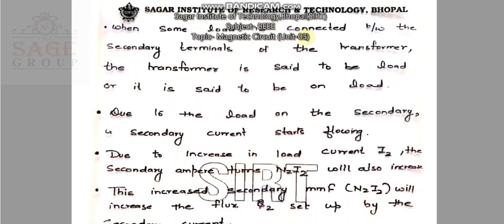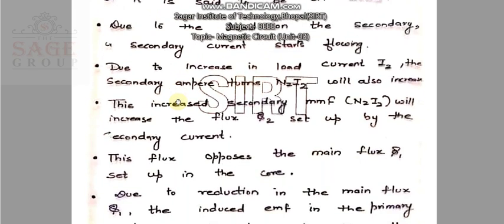When some load is connected between the secondary terminals of the transformer, the transformer is said to be on load. Due to the load, secondary current starts flowing. Due to an increase in the load current I2, the secondary ampere-turns N2 I2 will also increase. This increased secondary MMF, that is N2 I2, will increase the flux phi 2 set up by the secondary current.